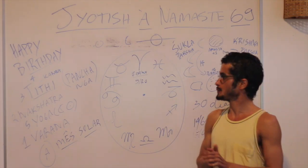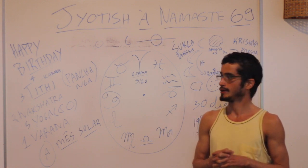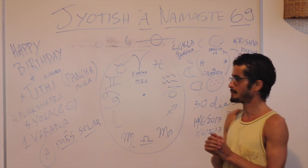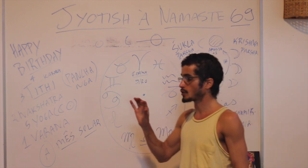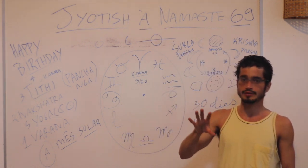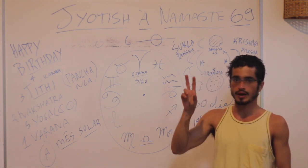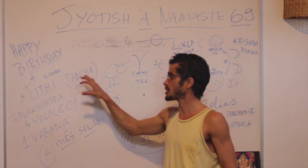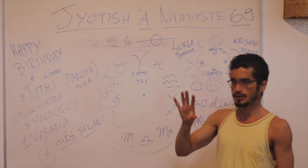Hello. So, today I'm a little bit in a hurry. Some things here are written in Portuguese, don't mind, I'm going to translate them. Today we are going to talk about how to find the date that is going to be your birthday according to Jyotish. In Jyotish, we have the Panchanga system, that means five — Pancha — limbs.